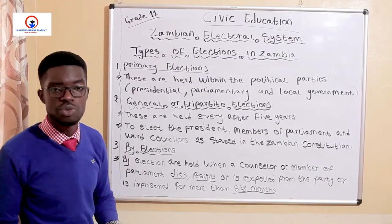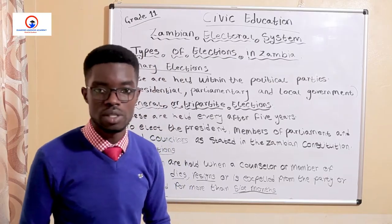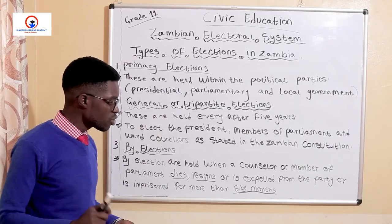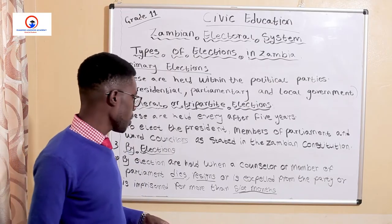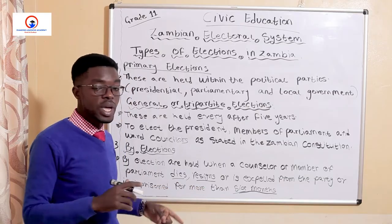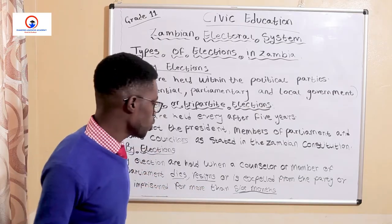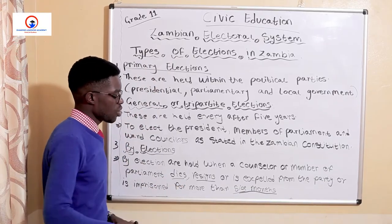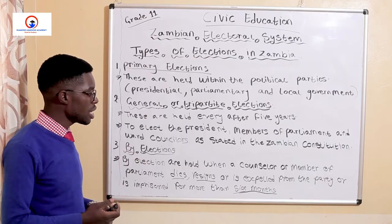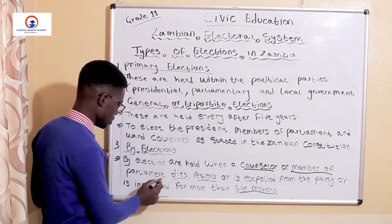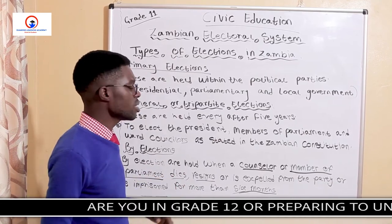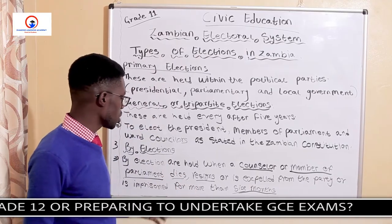Why can't we have by-elections for the president in Zambia? The 2016 constitutional amendment abolished the rule of having presidential by-elections and introduced what is known as the single member majority. This is why we have the president and the running mate. Suppose the president dies in office, we are not going to host by-elections. Instead, the vice president will automatically become the president. So in Zambia, by-elections are only held when a councillor or member of parliament dies, resigns, is expelled from the party, or has been sentenced to prison for more than six months.